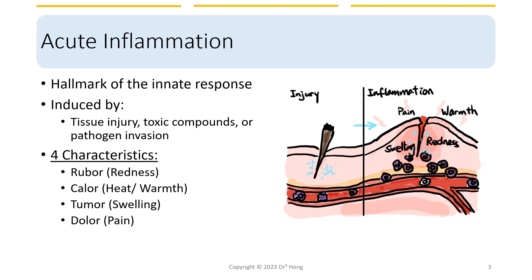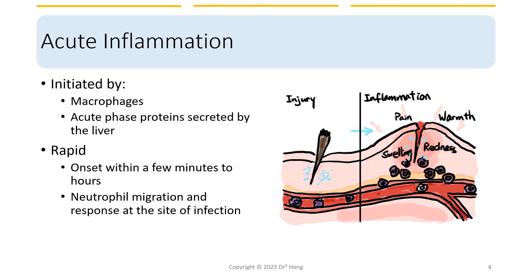From this point on, I'll just refer to the regular terms we use to describe these characteristics. There are two major players that spark the start of acute inflammation, which are macrophages and acute phase proteins secreted by the liver. These reactions are usually very fast — onset within a few minutes to two hours — during which neutrophils migrate to the site of infection and provide an innate immune response.